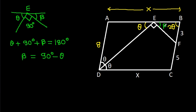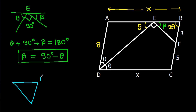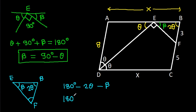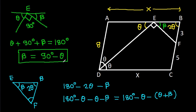So beta is 90 degrees minus theta. Now for angle BEF: this angle is 2 theta and this angle is beta, so angle BEF equals 180 degrees minus 2 theta minus beta. That is 180 degrees minus theta minus theta minus beta. And from here we can get theta plus beta equals 90 degrees, so angle BEF equals 90 degrees minus theta, which is beta.